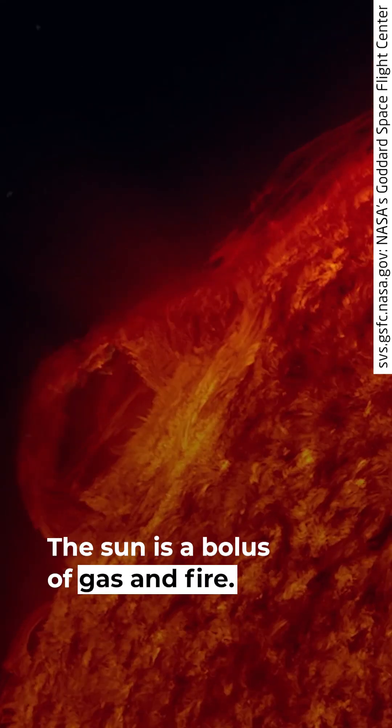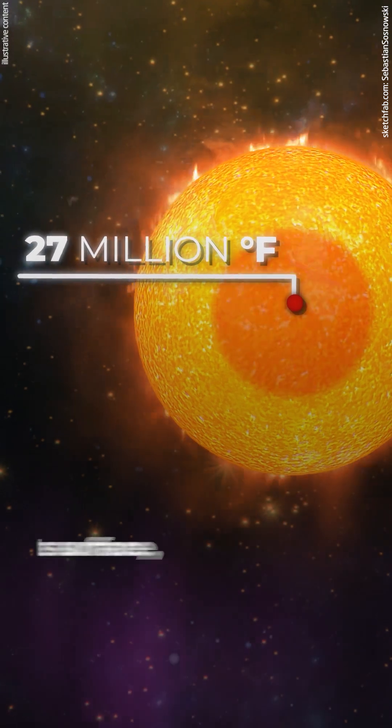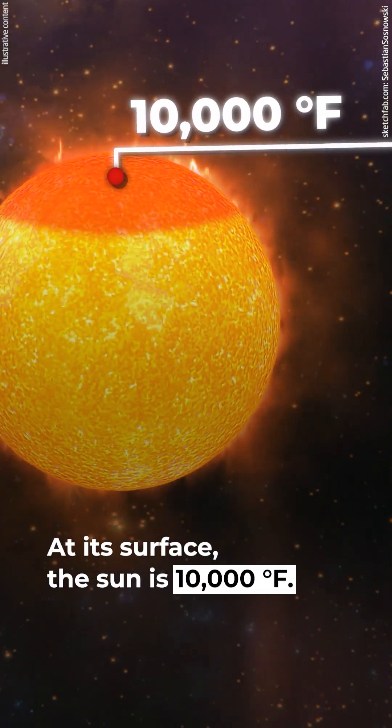The sun is a bolus of gas and fire. It measures around 27 million degrees Fahrenheit at its core. At its surface, the sun is 10,000 degrees Fahrenheit.